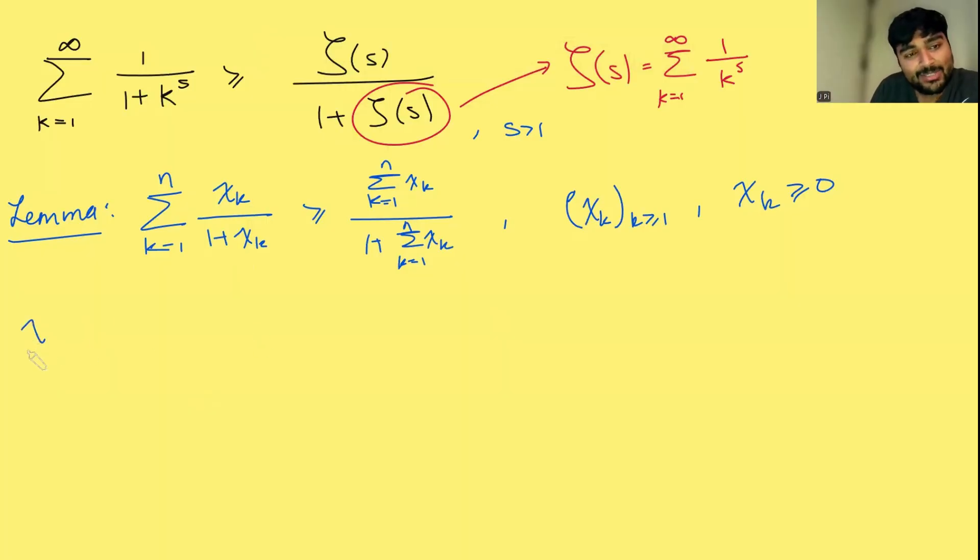So now to use the lemma, what I'm going to do is say let xk equal 1 over k to the s, then pretty clearly each of these terms are non-negative. What do I get from the lemma? Then I get that the sum from k equals 1 to n of 1 over k to the s over 1 plus 1 over k to the s is at least this sum here. The sum from k equals 1 to n of 1 over k to the s over 1 plus the sum from k equals 1 to n of 1 over k to the s.